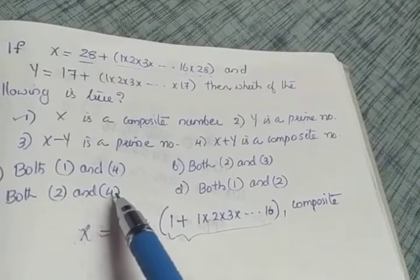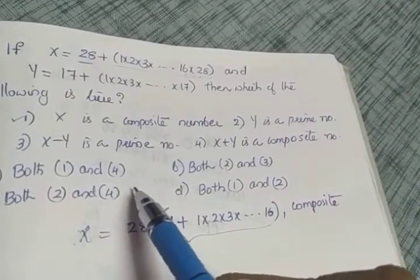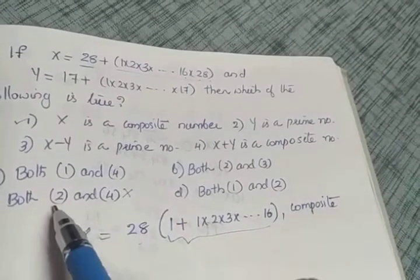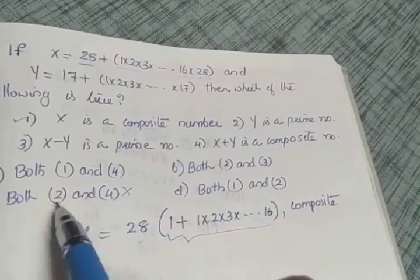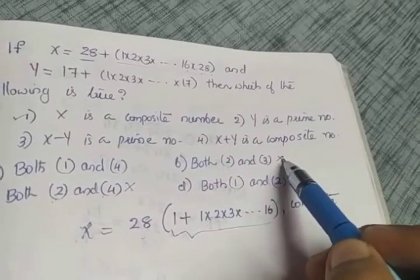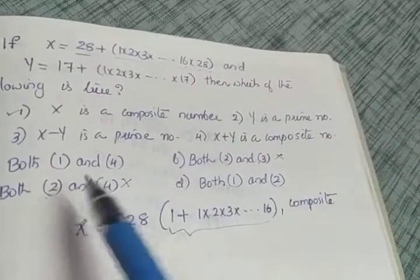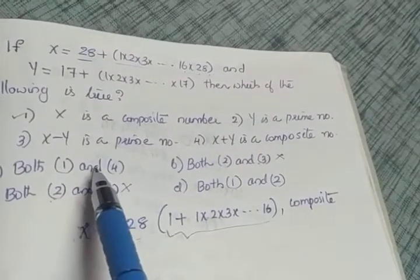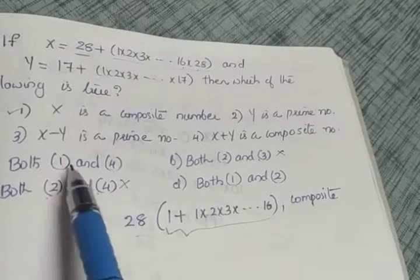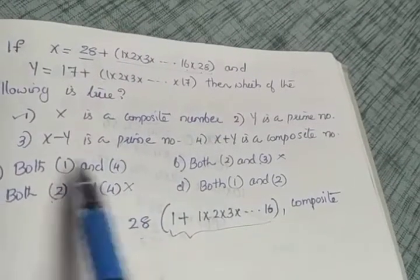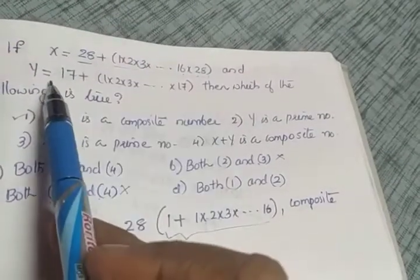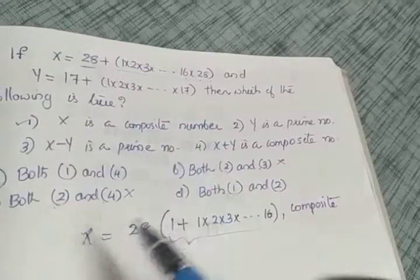Since statement 1 is true, we can eliminate options B and C because they don't include statement 1. We must select from option A or option D, since both contain statement 1 (x is a composite number). Now let's evaluate y.